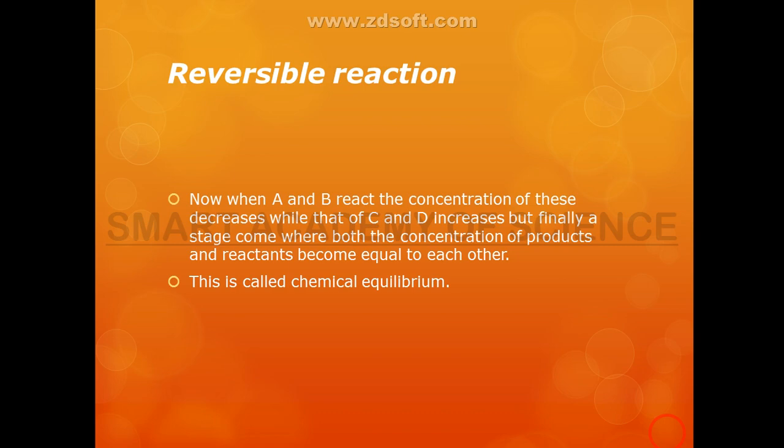This is a stage where the product and reactant concentrations become equal to each other. At this point, C plus D converts back to A plus B and A plus B converts to C plus D at the same rate. This state is called chemical equilibrium.